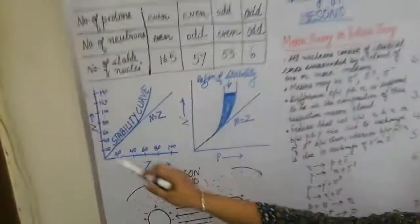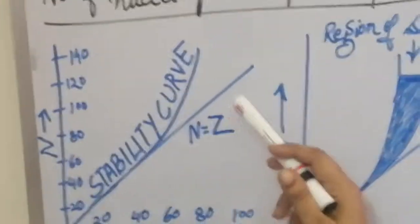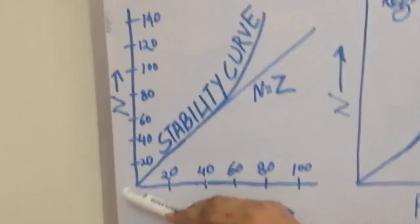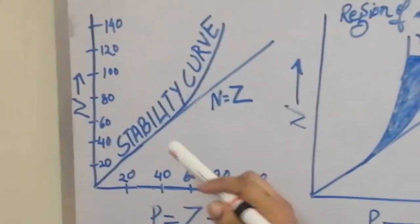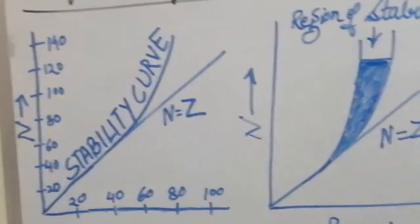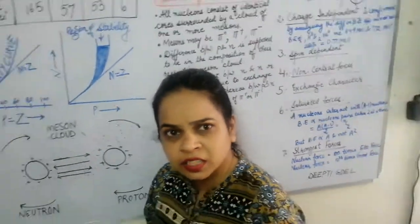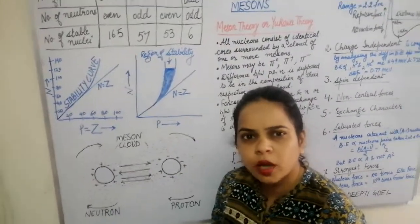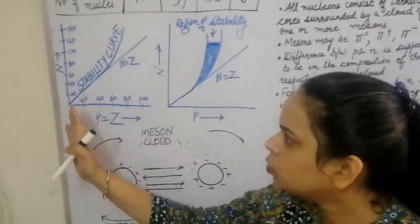If we see the stability curve — on the y-axis we have the number of neutrons, on the x-axis the number of protons — we see that if we draw an N equals Z line, the stability curve is not lying on that straight line inclined at 45 degrees. The stability curve is shifting towards the number of neutrons, because as the number of protons increases, being positively charged, there would be Coulombic repulsions causing instability in the nucleus.